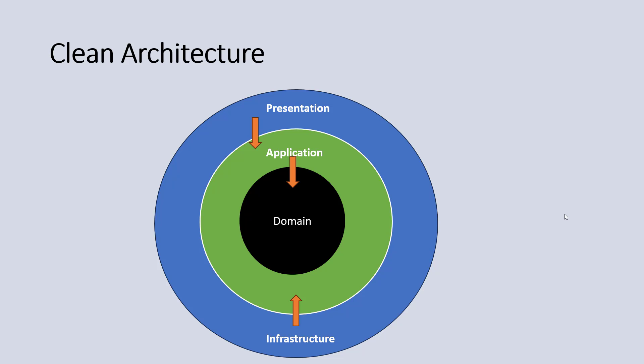The domain layer contains the model data and related configuration data. The application layer uses the domain layer — you can say the application layer is the repository layer. That repository layer is used by the infrastructure layer, and the infrastructure layer is used by the presentation layer. That is known as clean architecture.